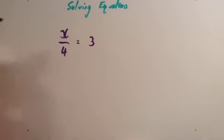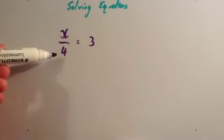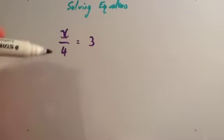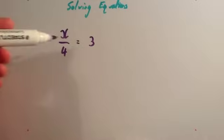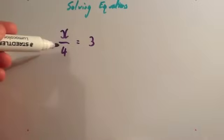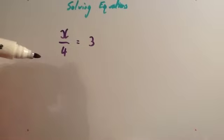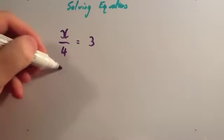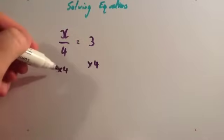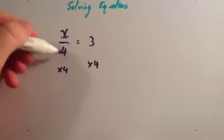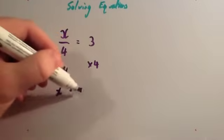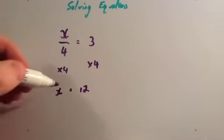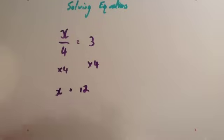Let's look at another example. This time we've got x divided by 4 equals 3. Remember, you want to get letters on one side, so you just want x on the left-hand side. Because you want to get x on its own, you want to get rid of the divide by 4. To get rid of the divide by 4, do the opposite to both sides — so you're going to multiply both sides by 4. You multiply by 4 to get rid of the divide by 4, so you're left with x. And 3 times 4 is 12. So the answer is x equals 12.